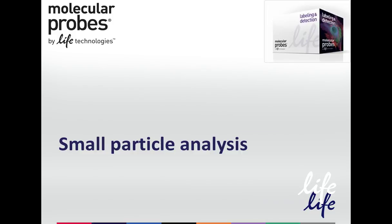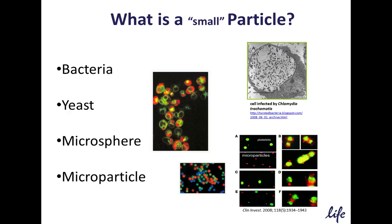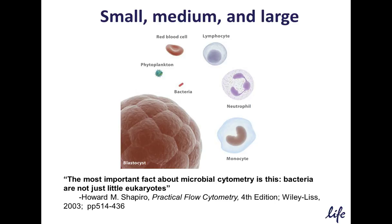Let's move to our next topic: small particle analysis. What exactly is a small particle? In flow cytometry, a small particle is a term used to describe sub-micron particles such as bacteria, yeast, synthetic microspheres, or cell-derived microparticles. For many decades, flow cytometry has been used to study eukaryotic cells, especially blood cells such as monocytes, neutrophils, or lymphocytes. Phytoplankton and bacteria are much, much smaller than these types of cells, and the small size of bacteria presents different considerations for a flow cytometry experiment.